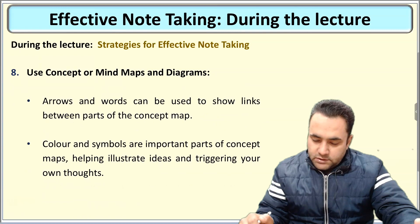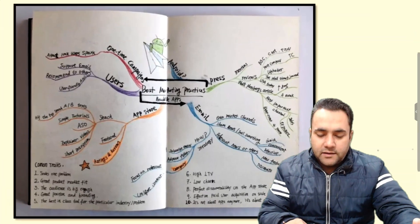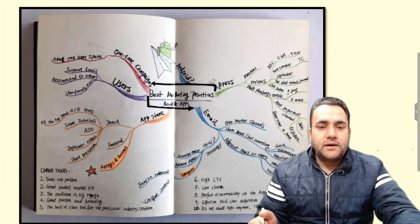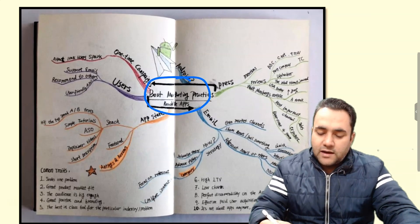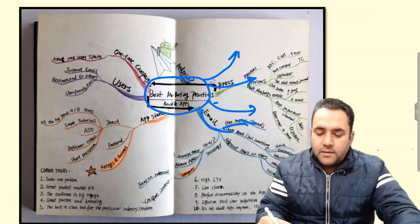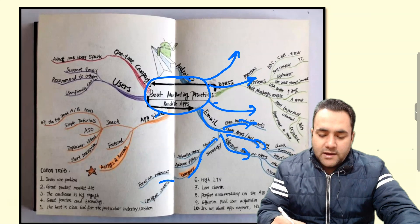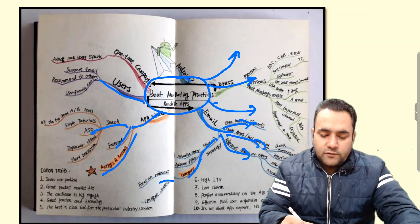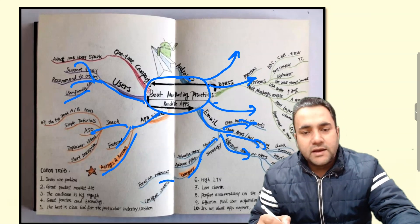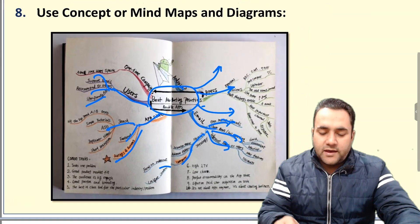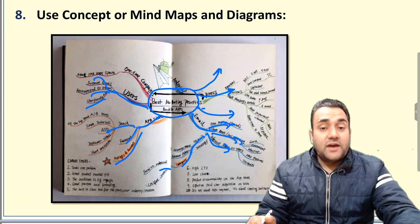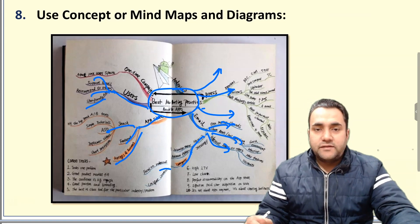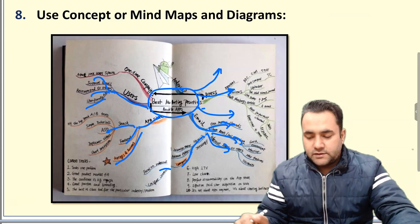A mind map looks like a diagram with a central idea in the middle, and from that central idea, different points branch outward with further sub-branches. The more information you can capture in mind map form, the better — you can fit a lot of information into very few pages.